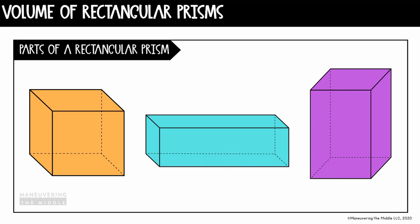All prisms have two bases that are parallel and congruent to each other. In a rectangular prism, since all of the faces are rectangles, you can actually choose any two parallel faces to be the base. The only difference your choice will make is what you will use for the height when we're finding the volume. The height is the distance between those two bases. I like to use the base that the prism is actually sitting on, but there are multiple ways to do that.